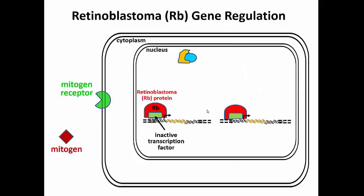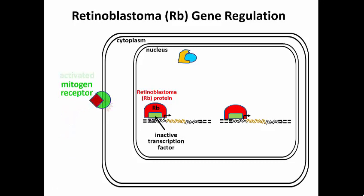You're looking at an example of a known signal transduction pathway that starts when a mitogen binds to a cell surface receptor, and initiates a phosphorylation cascade that then activates a number of cyclin-dependent kinases.